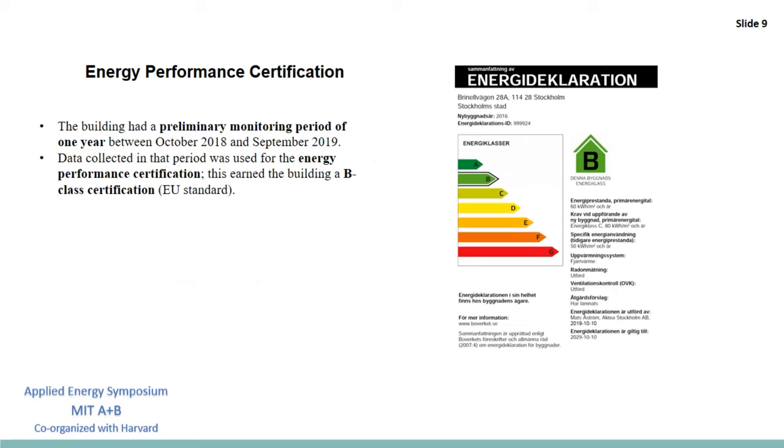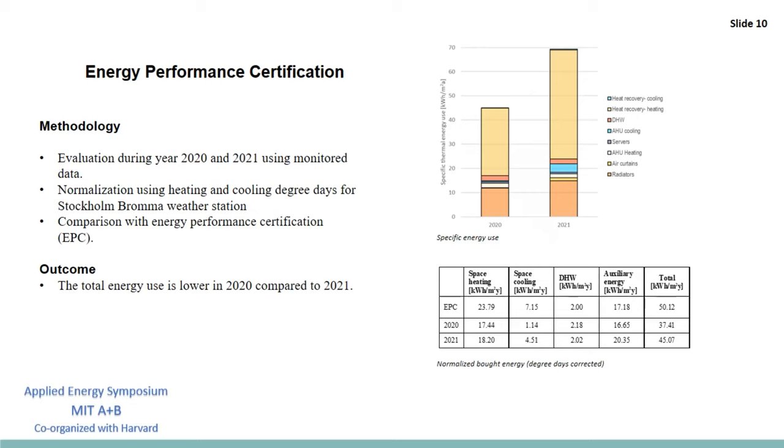Before looking at the monitored energy data we need to say that the building had a preliminary monitoring period of one year between October 2018 and September 2019 and earned a B-class certification according to the EU standard. We then analyzed monitored energy data for 2020 and 2021. Specific energy use is reported in the bar chart. The table below shows normalized energy use for 2020 and 2021 and for the year of certification. Specific energy use is much lower in 2020 as compared to 2021. In both years we can appreciate the importance of heat recovery that covers a very large part of the demand. The normalized energy use in 2020 is significantly lower than 2021 and the one of 2021 is lower than the one of the energy certification year. The normalization was done using the heating and cooling degree days.